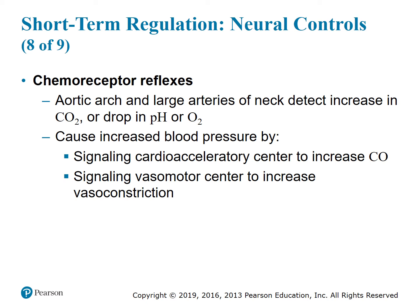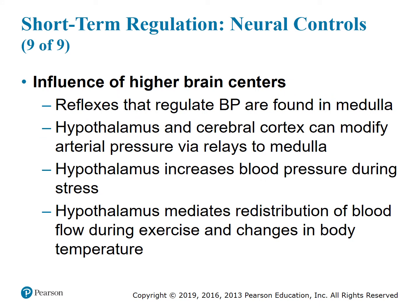Chemoreceptor reflexes: the aortic arch and large arteries of the neck detect an increase in CO₂, a drop in pH, or a drop in O₂, and these cause increased blood pressure by signaling the cardioacceleratory center to increase cardiac output and the vasomotor center to increase vasoconstriction. Higher brain centers: reflexes regulating blood pressure are found in the medulla, but the hypothalamus and cerebral cortex can modify arterial pressure via relays to the medulla. The hypothalamus increases blood pressure during stress and mediates redistribution of blood flow during exercise and changes in body temperature.